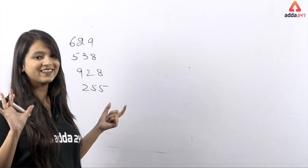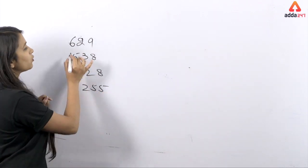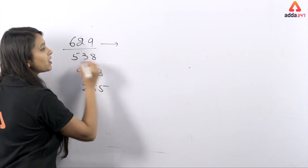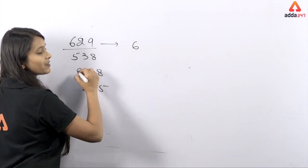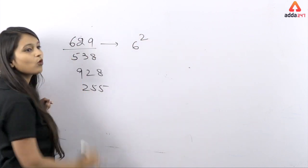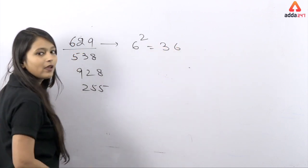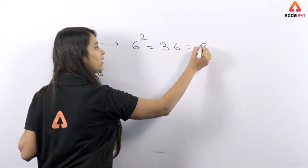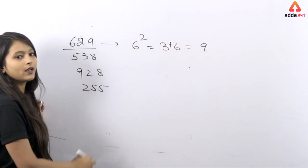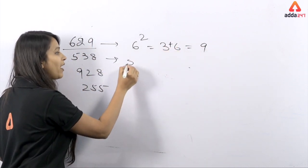629 - so how do I write this? 6 square, so how much is it? 36. 3 plus 6, how much is it? 9. So 3 plus 6 equals 9.